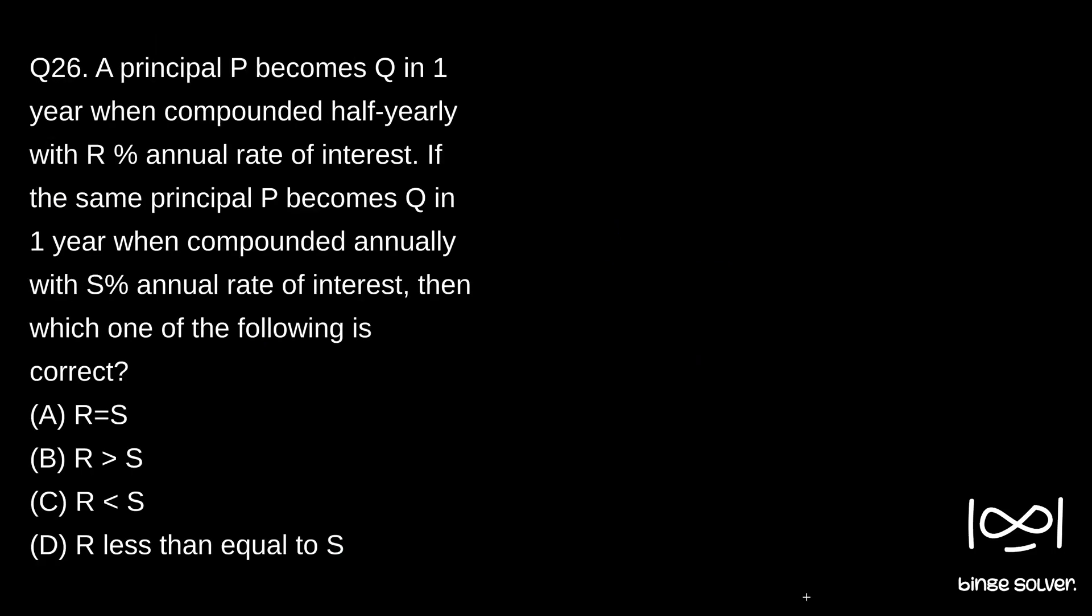Next question. Question 26. A principal P becomes Q in one year when compounded half-yearly with R percentage annual rate of interest. If the same principal P becomes Q in one year when compounded annually with S percentage annual rate of interest, then which one of the following is correct?